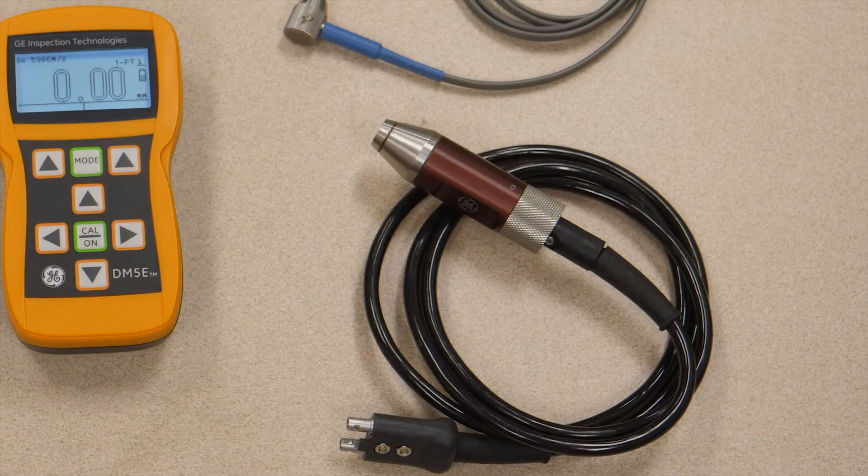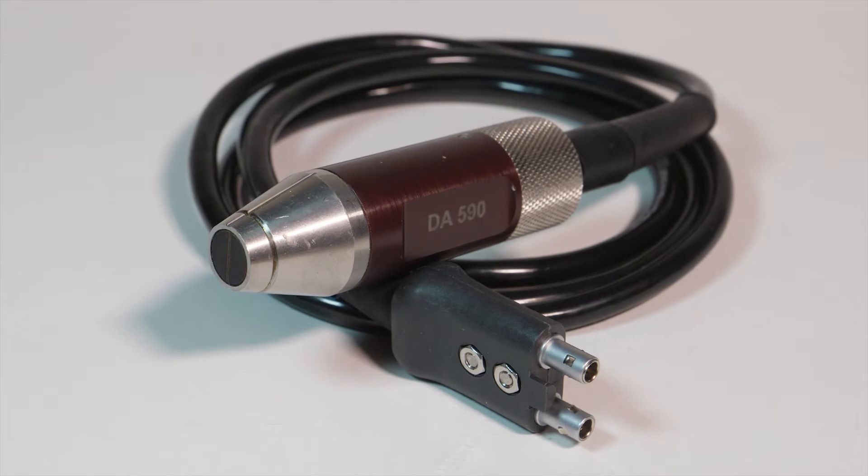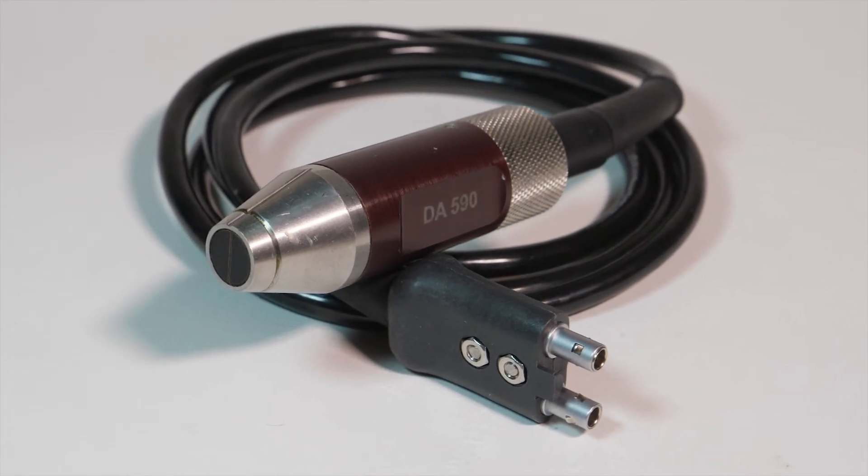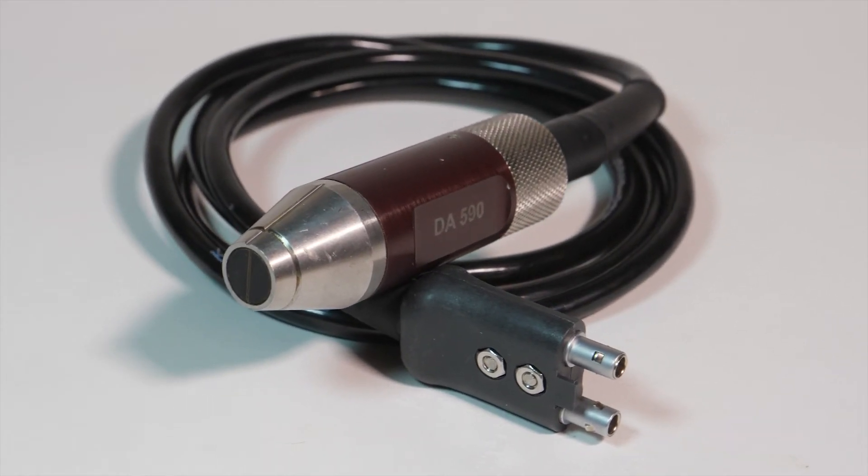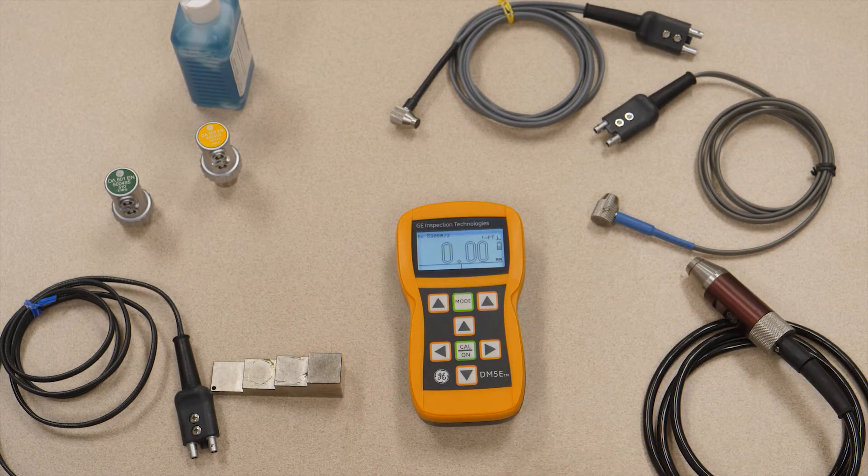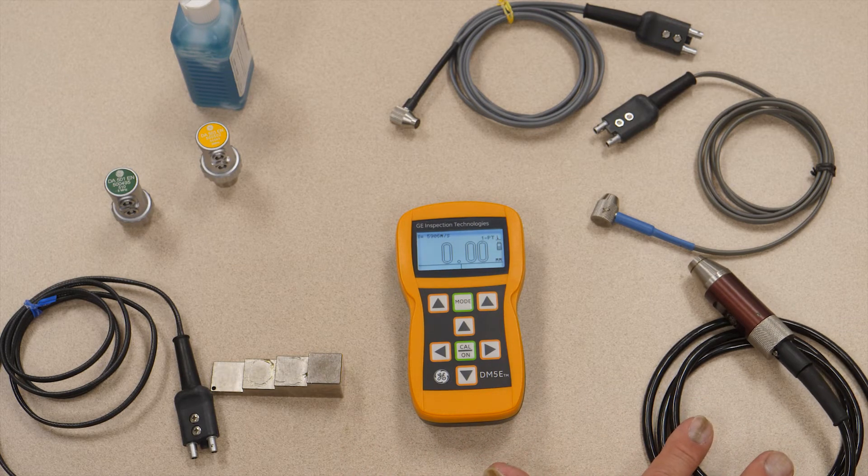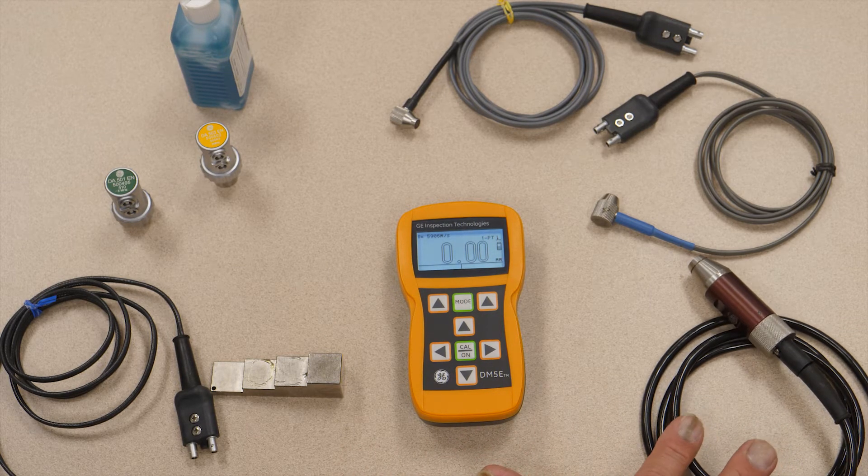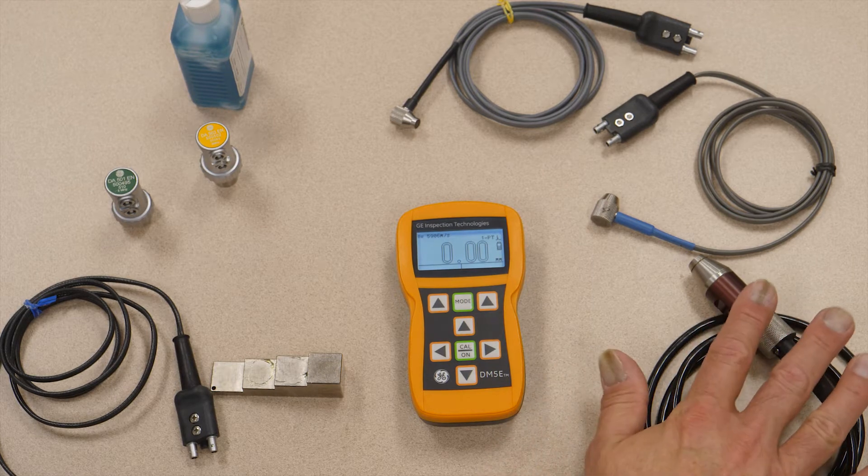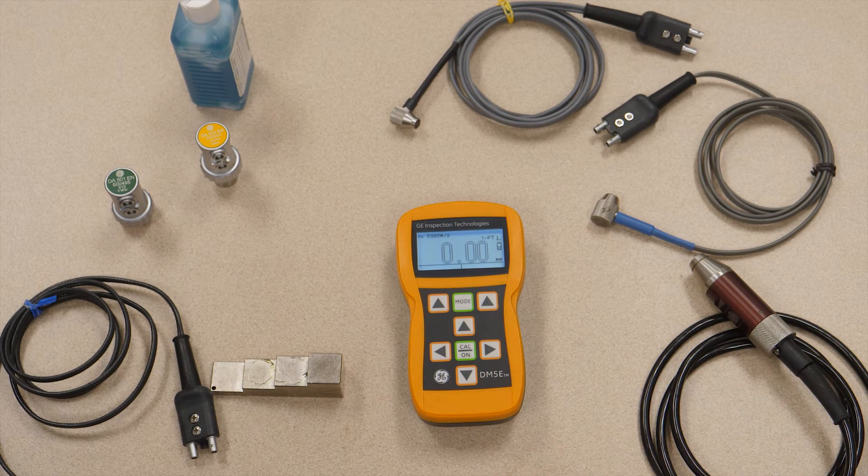And we also offer the DA590, which is a high temperature probe. You can measure on materials up to four hundred degrees Fahrenheit with this probe. Now the DM5E, unlike the DMS-GO our more advanced gauge, doesn't offer temperature compensation for the measurement. So you're still getting the raw thickness measurement, but the DA590 probe is available to work at higher temperatures.